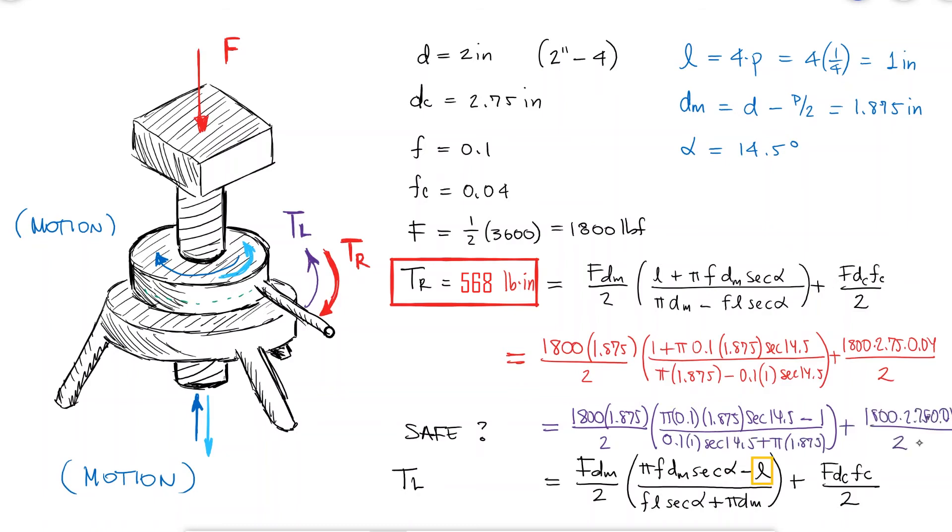However, because of the high value of the lead and the low friction between the threads—think about the free body diagram we used to derive these equations—so again, high lead and low friction coefficient, mathematically the torque required to lower the load is negative.